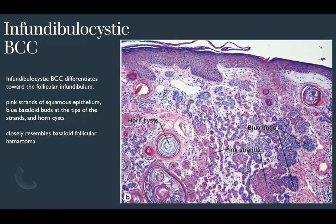Infundibulocystic BCC — sometimes called adenoid BCC — has a basal cell carcinoma with very thin pink strands surrounded by basaloid staining, areas of blue basaloid budding, and some horn cysts. It resembles a reticulated seborrheic keratosis and BCC cross. BerEP4 will highlight the islands in an infundibulocystic BCC but be completely negative in a reticulated seborrheic keratosis. This subtype indicates differentiation towards the follicular infundibulum. It closely resembles basaloid follicular hamartoma, so BerEP4 positivity and cellular pleomorphism with areas of infiltration favor the BCC.